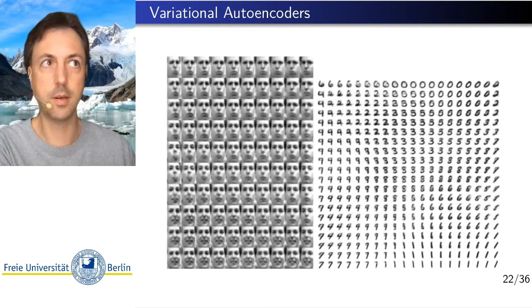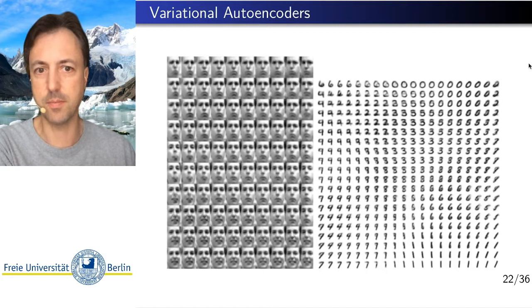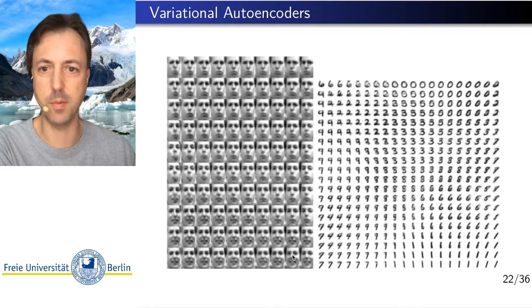So let's look at some examples. These are outputs of variational autoencoders that have been trained on images of a person with different mimics, with different face expressions, and MNIST data.